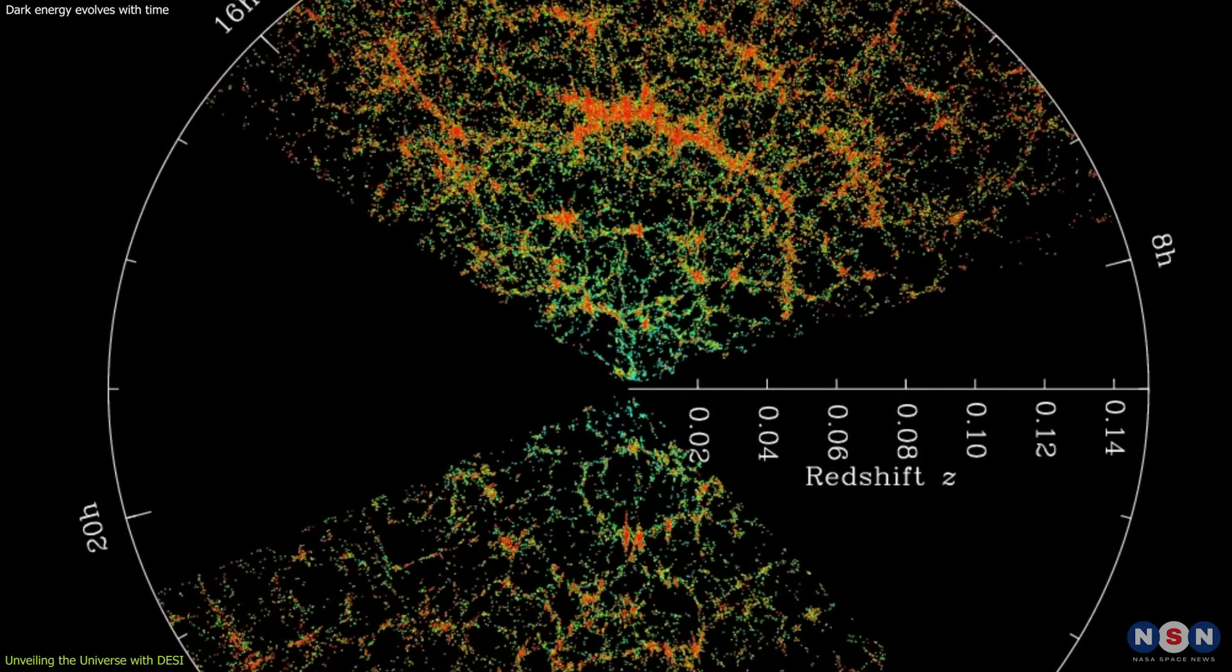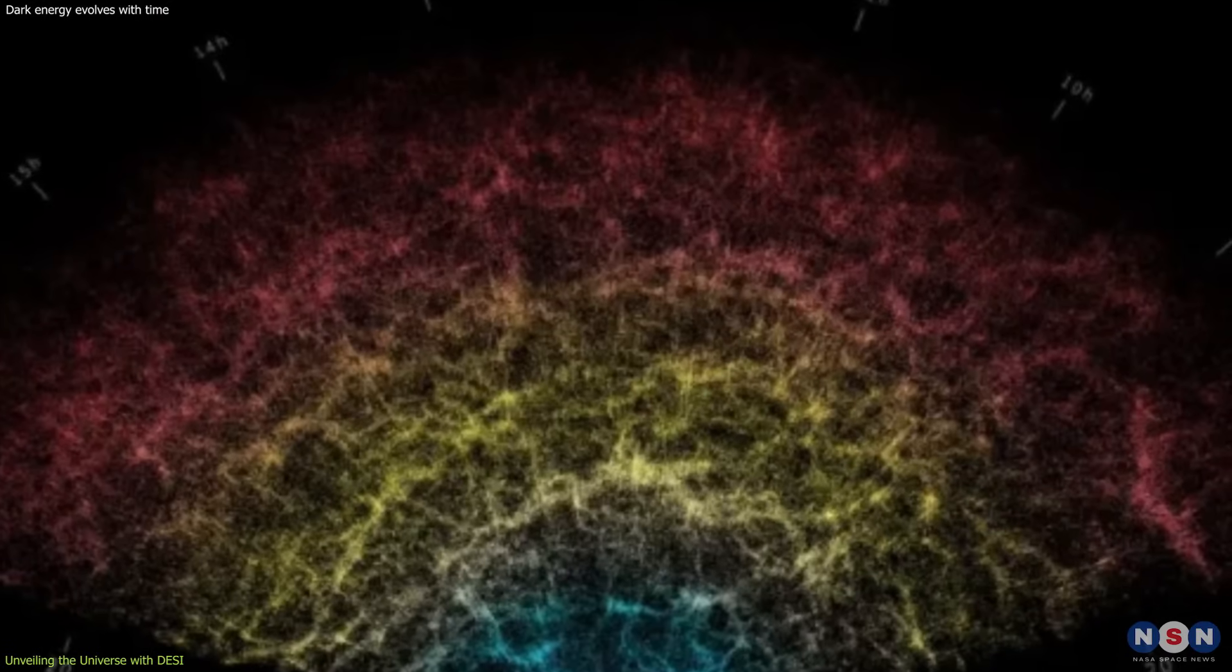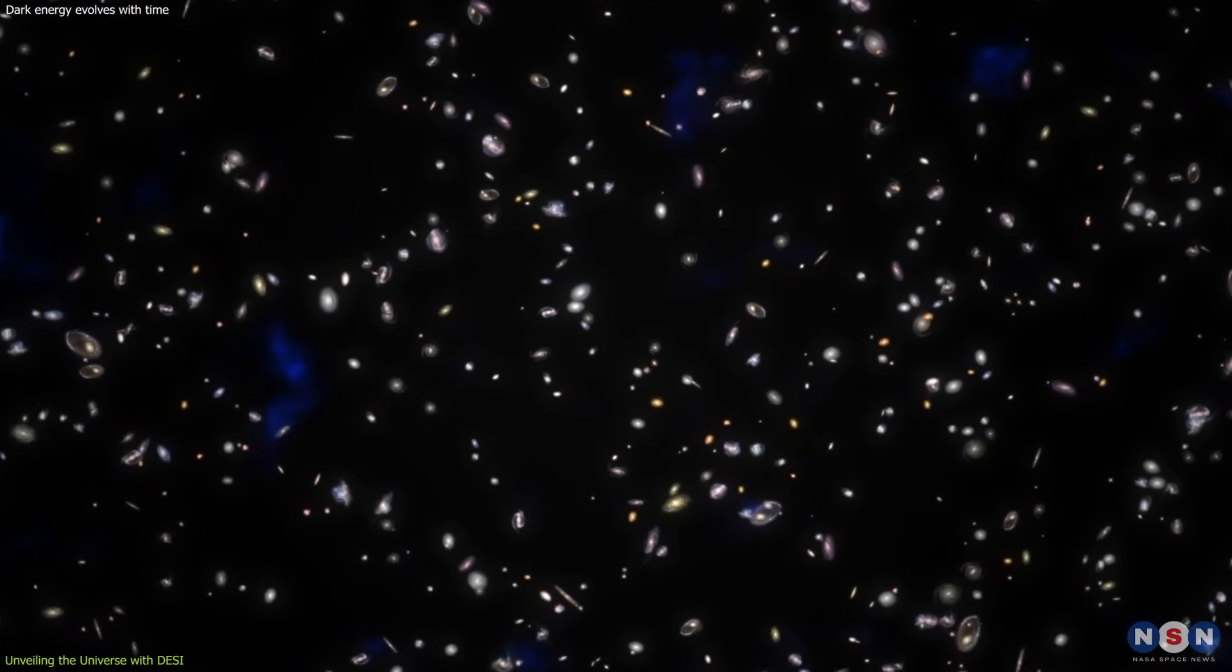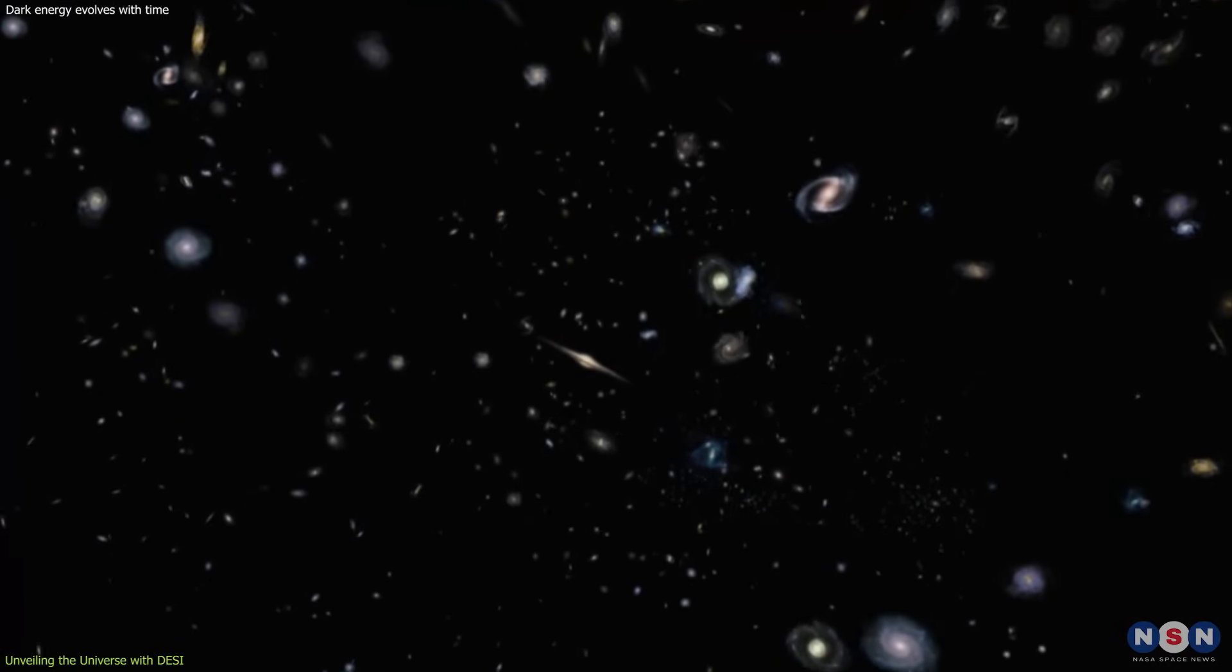The map also highlights a faint pattern known as baryon acoustic oscillations, which are subtle 3D wrinkles that formed in the early universe. These wrinkles provide a cosmic ruler that helps astronomers estimate distances to galaxies and infer the universe's expansion rate at various points in time.